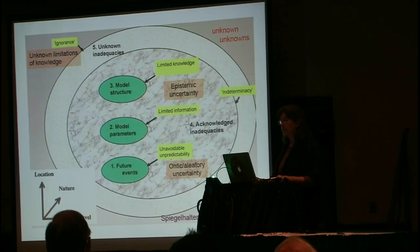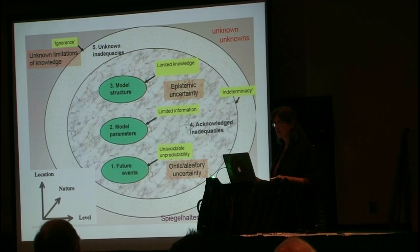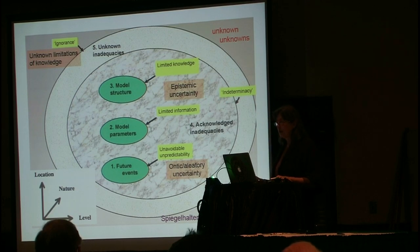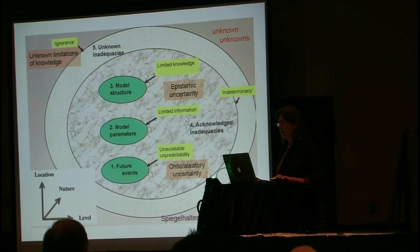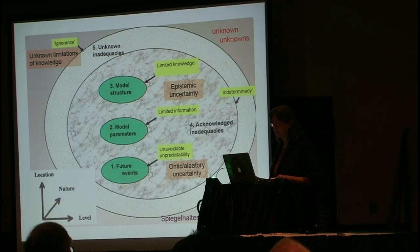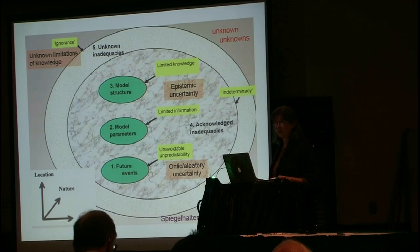If we're going to talk about uncertainties, especially with models and observations, there's an amazing number of uncertainties to consider. It would take more than the time of this talk to list all the uncertainties associated with the attribution argument. There's the location of uncertainty, like a particular parameterization in the model. There's the nature of uncertainty — whether it's statistical uncertainty or whether we're in the realm of ignorance. There's epistemic uncertainty, associated with limited knowledge and information, and then there's ontic or aleatory uncertainty, which is fundamentally irreducible uncertainty associated with the nonlinear chaotic variability of the climate system.